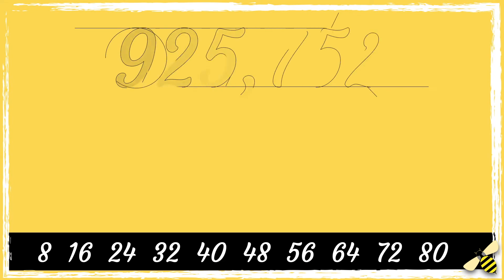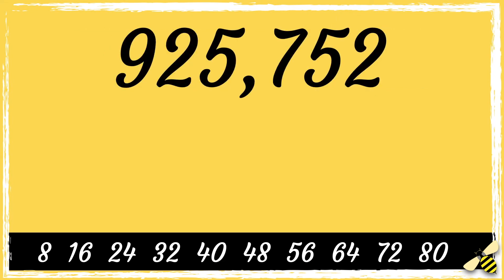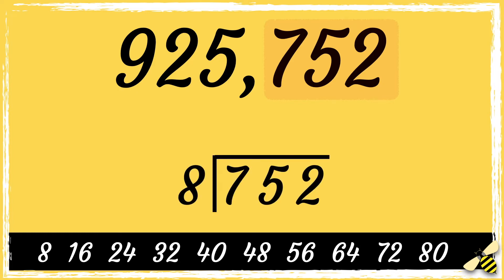Now we have 925,752. So let's look at the last three digits. From the top of my head I don't know if 752 is divisible by eight, so I'm going to do some short division to help me. Eight goes into 75 nine times with three left over. Eight then goes into 32 four times. There are no remainders, so this number is divisible by eight.